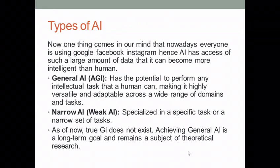Simply, we can say that AI learns from data and improves performance from past experience. For this, we have to give more and more data to AI to make it more efficient. If you look at today's world, everyone is using Google, Facebook, and Instagram — hence AI has access to a large amount of data. This large amount of data can make it even more intelligent than a human being.